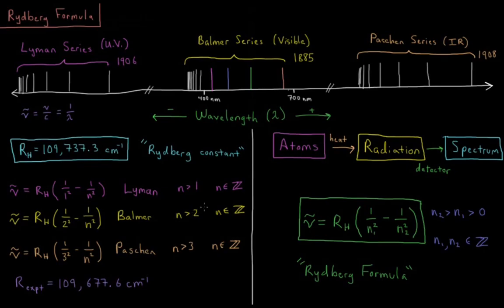So n can be 3, 4, 5, 6, etc. He discovered that these predict the locations of the lines in his series. The lines in the Balmer series are predicted by a constant times 1 over 2 squared, minus 1 over n squared, for n greater than 2.